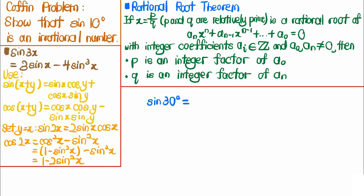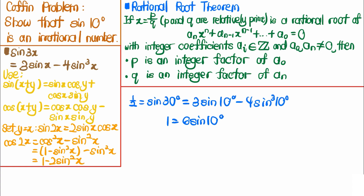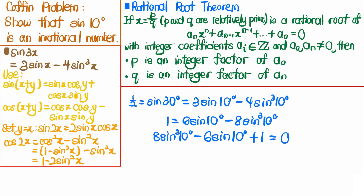Applying the triple angle identity: sine(30°) = 3·sine(10°) − 4·sin³(10°). Since sine(30°) = 1/2, multiplying through by 2 gives 1 = 6·sine(10°) − 8·sin³(10°), which rearranges to 8·sin³(10°) − 6·sine(10°) + 1 = 0. Setting x = 2·sine(10°) transforms this into x³ − 3x + 1 = 0, a polynomial with integer coefficients.